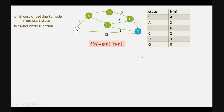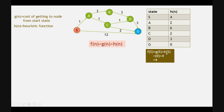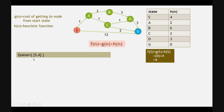To solve this, we will use a queue. Starting with the initial state s, we calculate f(s) = g(s) + h(s). g(s) is 0 since s is the initial state, and h(s) is 4 as given in the question. So f(s) = 4. We place s with f(n) value 4 into the queue.